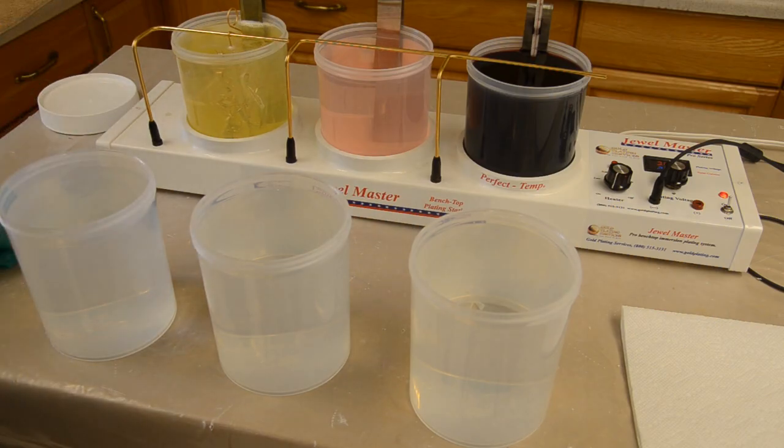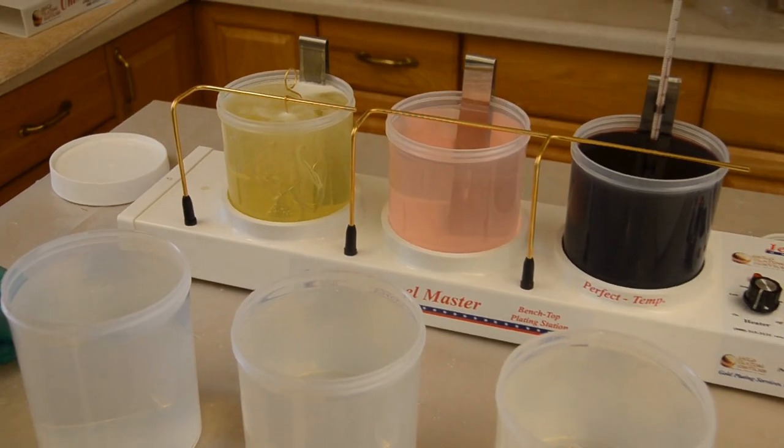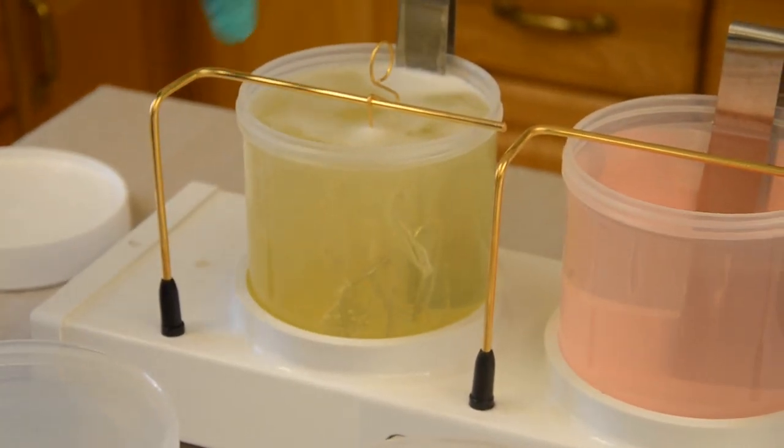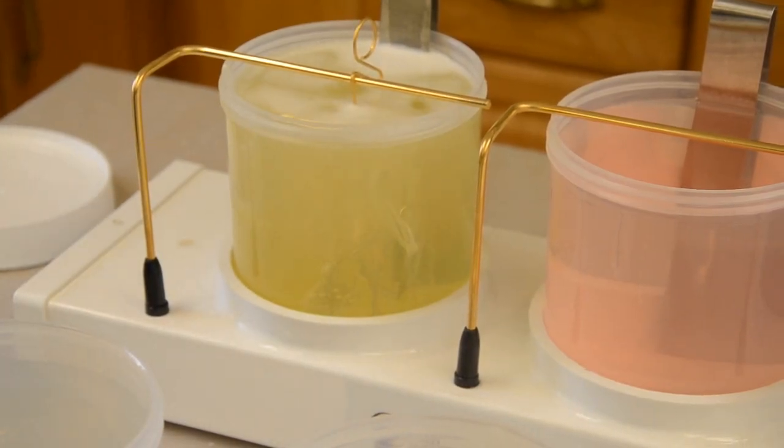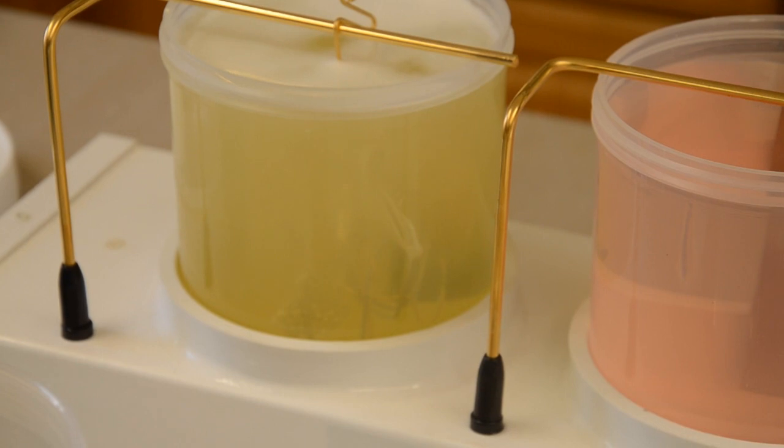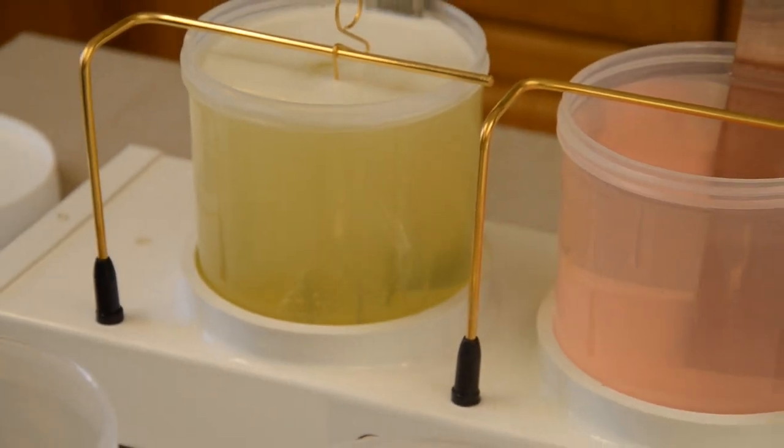And the first step is an electro cleaning, it's an alkaline electro clean. And you can see that when the part hangs on to the gold plated bus bar, the electrical current is provided to the pieces and we get some light bubbling at the surface and what that does is this light bubbling cleans off anything that might be residual, anything that could affect the plating. We'll do that for probably 20 to 30 seconds.